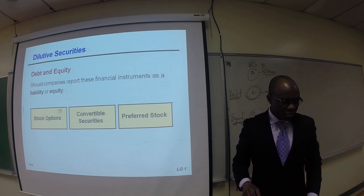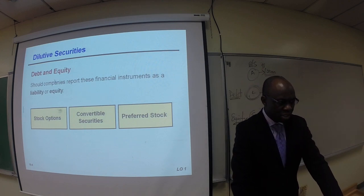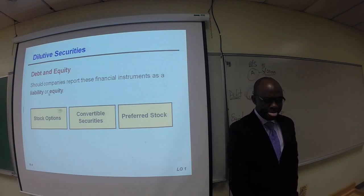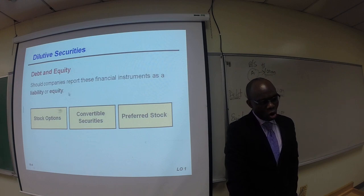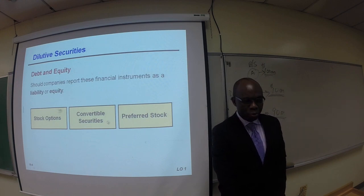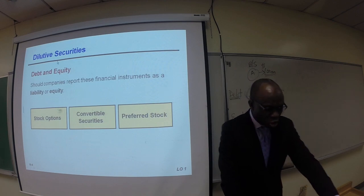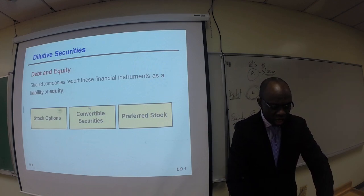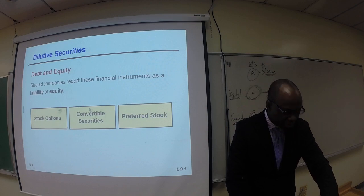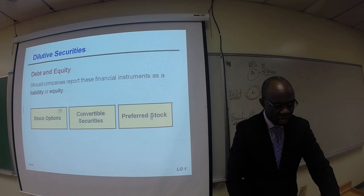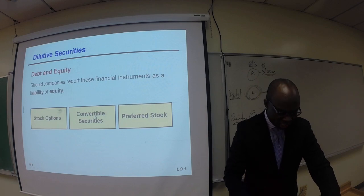Let's zero in on some examples. Some companies report these financial instruments as liability or equity — as debt or equity. Examples include stock options, convertible securities, and preferred stock. Preferred stock is clearly an equity security, while convertible securities like bonds are debt securities.